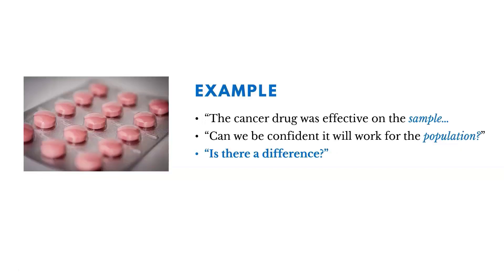Here's an example that we already talked about. The cancer drug was effective on the sample. Can we be confident it will work on the population? Is there any difference between these two things? Are the sample and the population the same? Can we assume they're the same? Or do we assume that they're different?